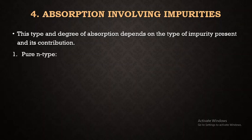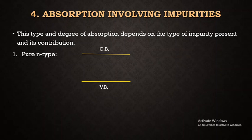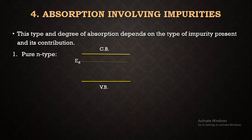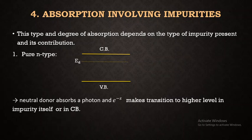First let us consider a pure N type semiconductor. In the energy level diagram we have the valence band at lower energy and the conduction band at higher energy. When we add pentavalent donor impurities into the intrinsic semiconductor we get an N type semiconductor, and the donor level lies just below the conduction band, denoted with energy ED. When a photon is incident, the donor electron absorbs the photon energy and is excited, with two possibilities.